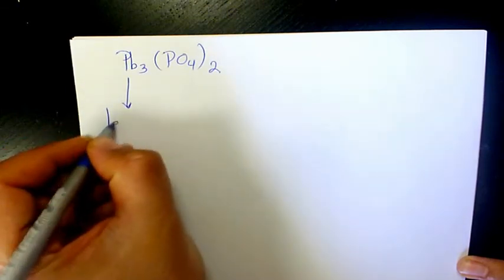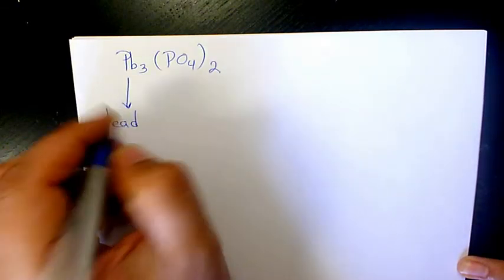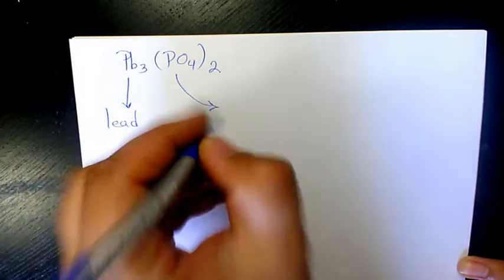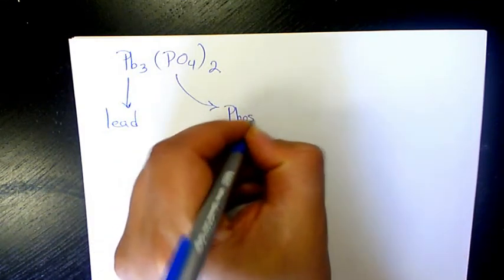Pb is lead, and PO₄ is a polyatomic ion called phosphate.